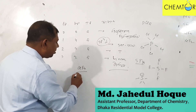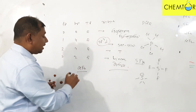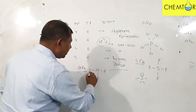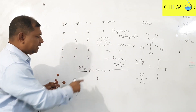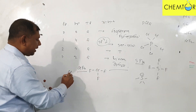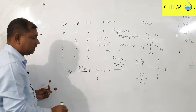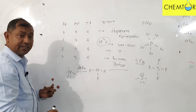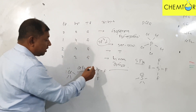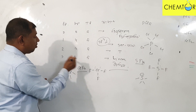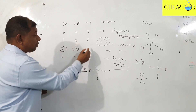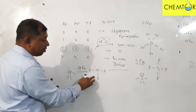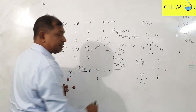Let's take a look at ClF3, Chlorine Trifluoride. Chlorine is connected to 1, 2, 3 fluorine atoms. When it is connected to 3 fluorine atoms, the chlorine has 7 valence electrons. If bond pairs are 3, lone pairs are 2, total electron pairs are 5. If lone pairs are 2 and bond pairs are 3, the shape is T-shape.